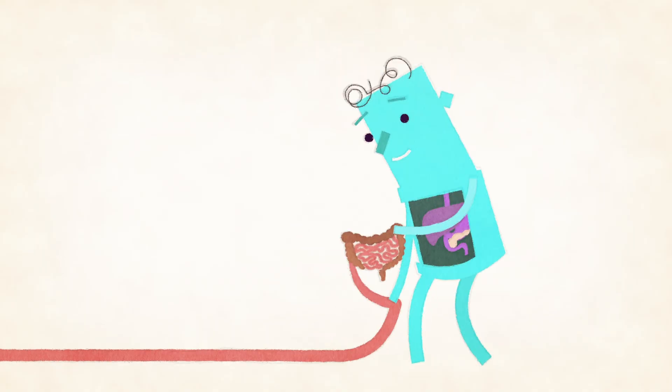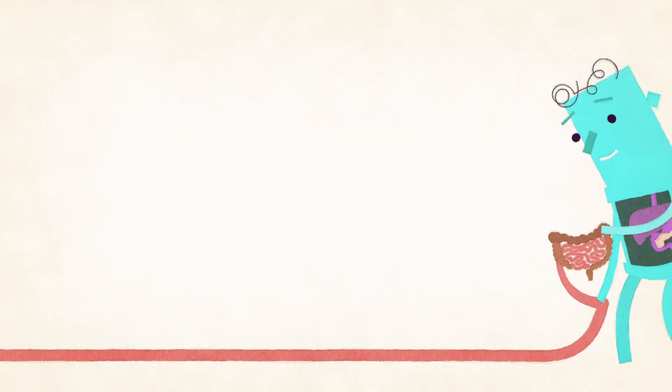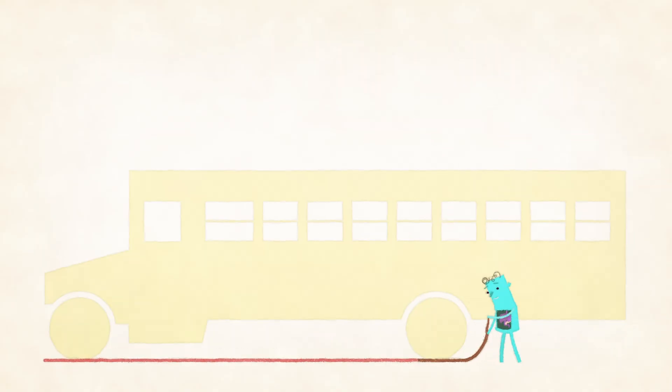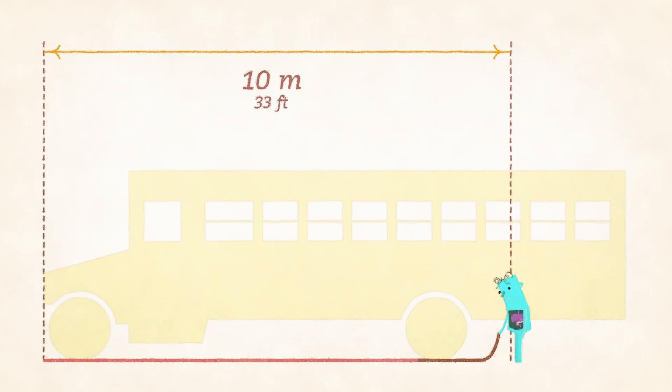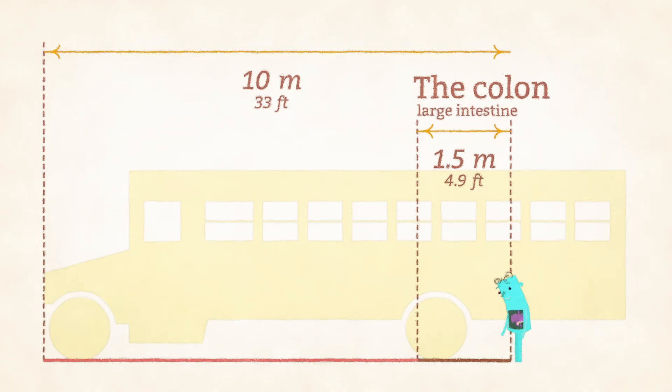If you were to lay your digestive tract out in a straight line, it would form a tube spanning nearly 10 meters. The last 1.5 meters of that are called the colon, or large intestine.